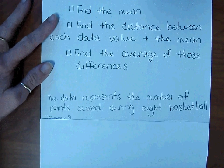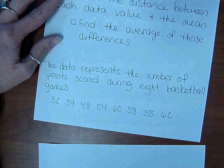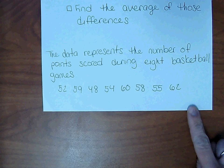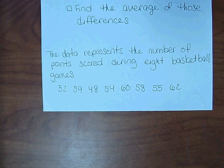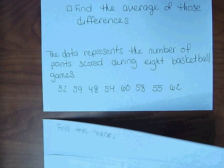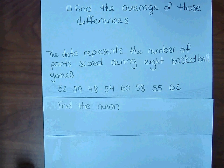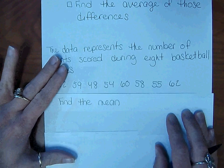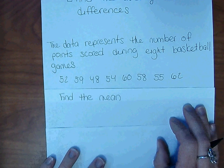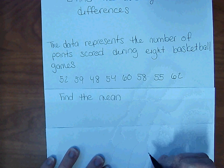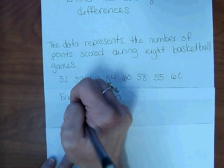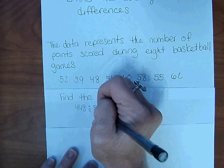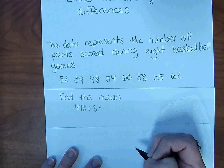Here is some data that represents the number of points scored during eight basketball games. The first thing we need to do is find the mean. Remember, mean is the average, so you add up all the values in your data and divide by how many there are. When we add all of these numbers together, we get 448, and there are eight pieces of data, so we divide by eight. The mean is 56.